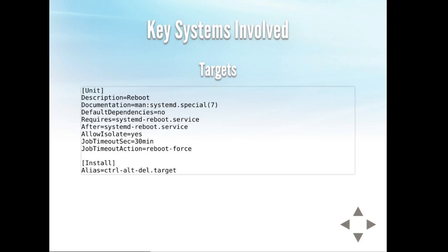This does take a little more diligence — you need to know what's going on in your boot process. You also have the notion of job timeout and the action to take. In this case, after 30 minutes, if the target has not been reached, it's going to force a reboot. You can also put aliases to another target, so that when you hit Control-Alt-Delete and that target starts, it will make this target go into isolation mode.